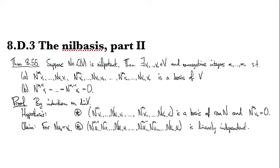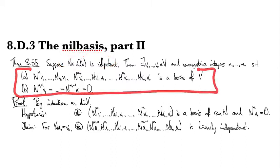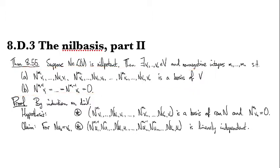Welcome back to part two of the nil basis. We've got a nilpotent operator, and we're trying to show that there exists a basis with these properties — that's what we're calling the nil basis — and we're doing this by induction on the dimension.